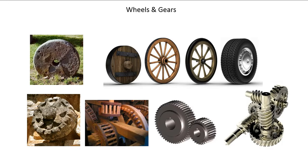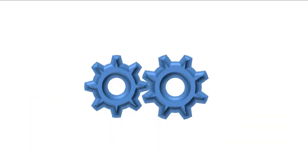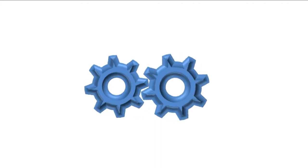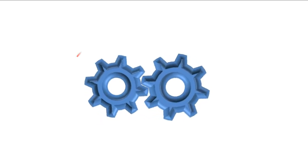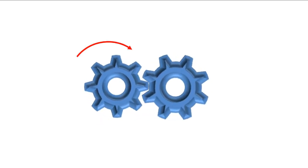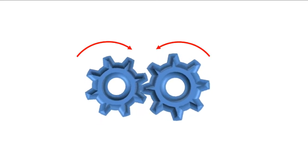Gears are essentially wheels with teeth on their rims. They are used to transmit force and motion direction, as we'll see. Let's start by noting how two gears can mesh like this. When one of them turns, the other turns in the opposite direction — clockwise, counterclockwise.